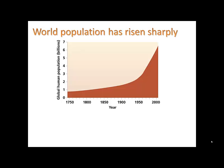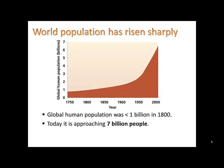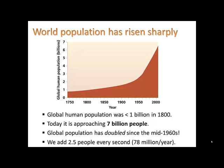We know that world population has risen sharply since the mid-1700s due to the Industrial Revolution. Global human population was less than 1 billion only about 200 years ago. Today it's approaching 7 billion people. Global population has doubled since the mid-1960s, and we add 2.5 people every second.